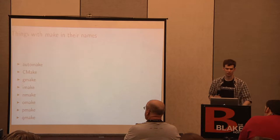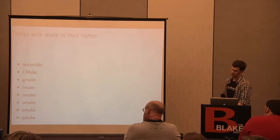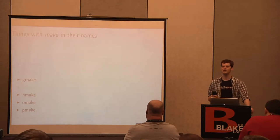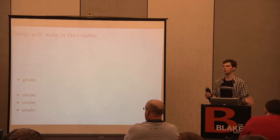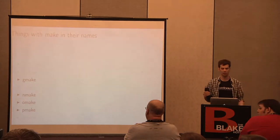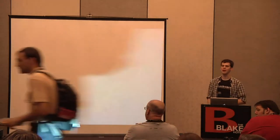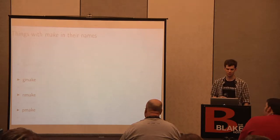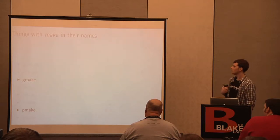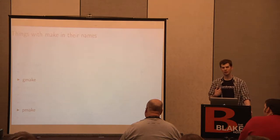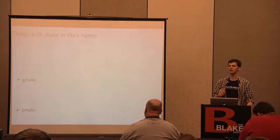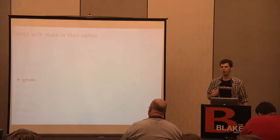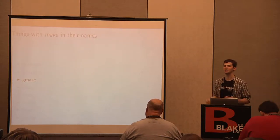About half of these are makefile generators, so we don't need to worry about them. OMake is a strange entity that's more about glomping files together to make a C or OCaml program rather than defining target rules. What we're left with are the true makes: GMake, NMake, and PMake. If you're using NMake, you're on a really old system or Windows — and if you're on Windows, you're probably using Visual Studio anyway. Between GMake and PMake, GNU make is significantly more common; PMake is really only used on BSD.